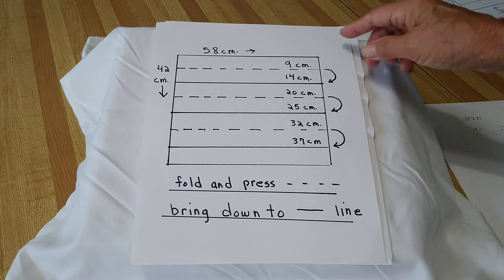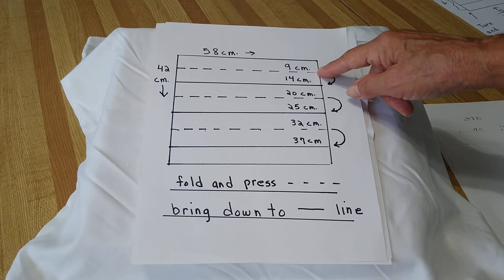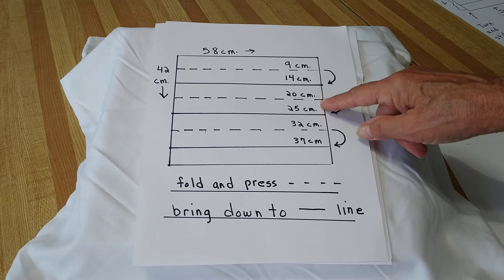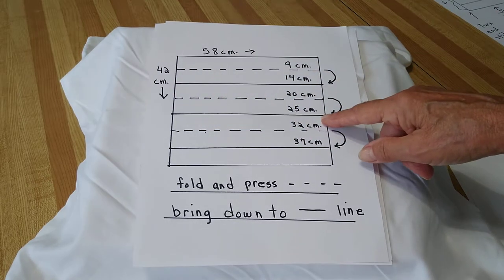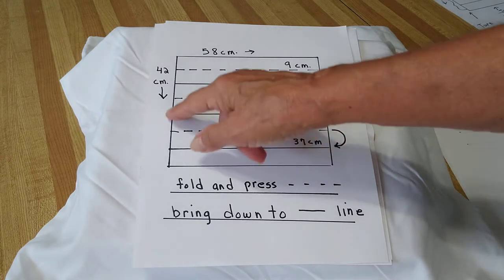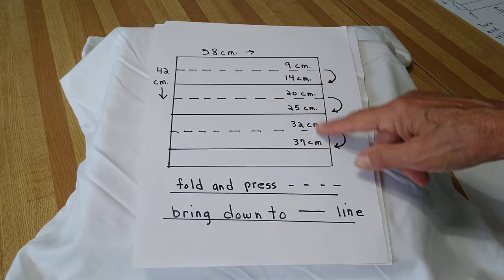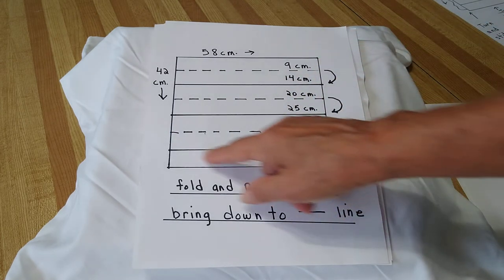Take your pattern and put dots 9 centimeters down, a straight line 14 centimeters down, 20 centimeters down dotted lines, 25 centimeters down a straight line, 32 centimeters down dots, 37 centimeters down a straight line.